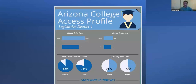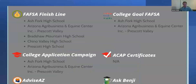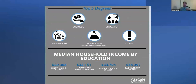A screenshot of the top third of Arizona's first legislative district profile contains information on the college-going rate, degree attainment, high school graduation rate, and FAFSA completion rate, each compared with the state average. The second third contains information on which schools in the first legislative district are enrolled in various educational programs. The bottom third highlights demographic information on the top five degrees and median household income by education for the district, encompassing all individuals living there — both new graduates and parents.